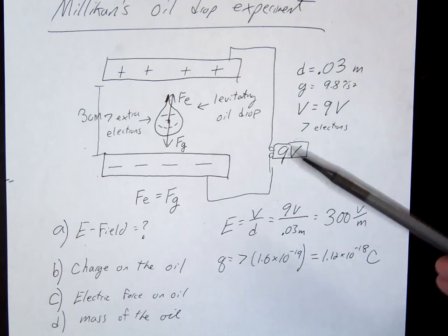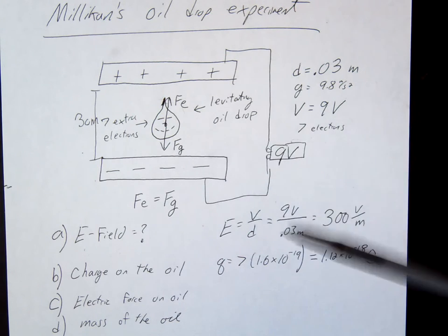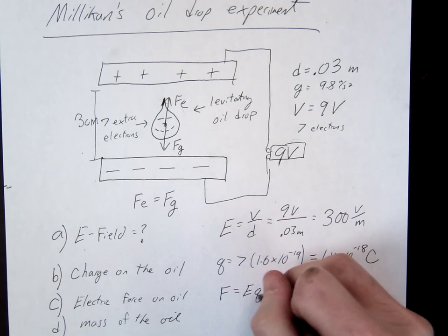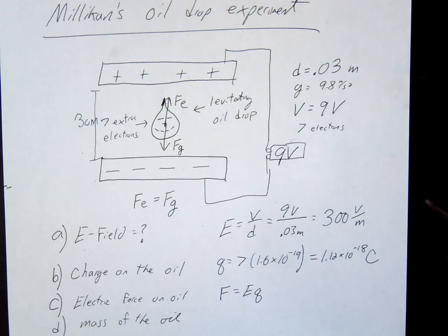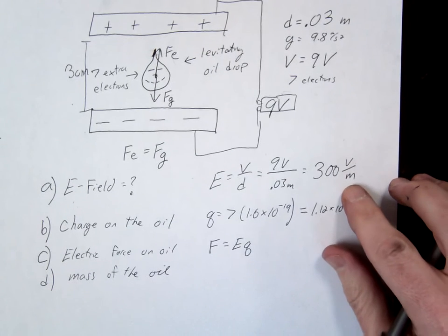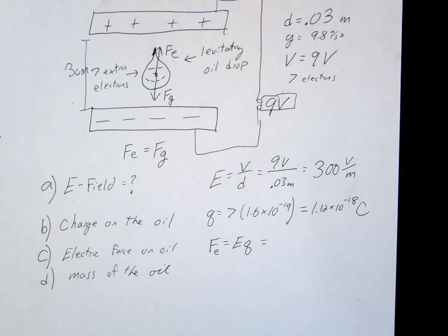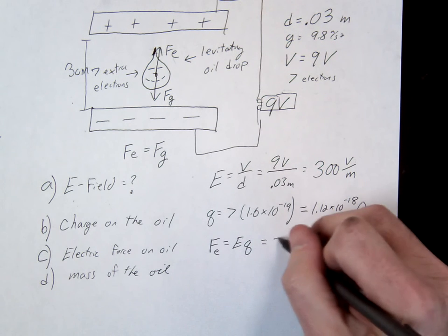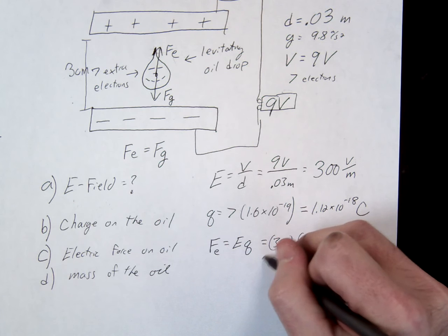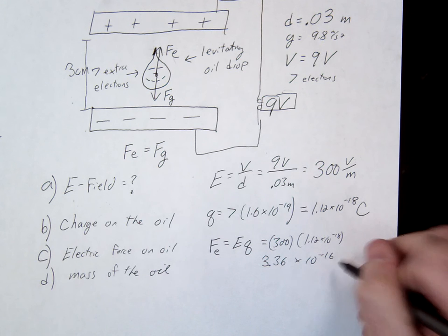Letter C: how do we find the electric force? F equals EQ. That gives us our electric force. Since we know the electric field and we just solved for Q, we can go ahead and solve for the electric force. The result is 3.36 — and the units for force are newtons.